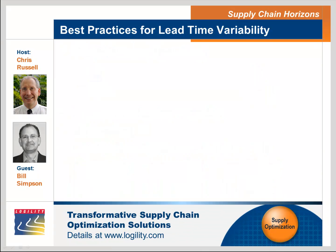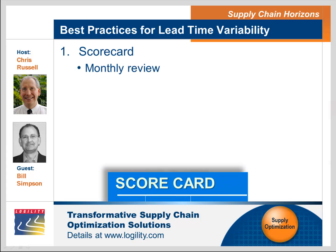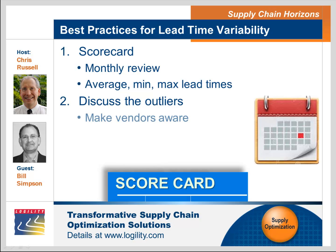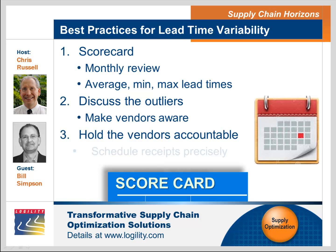What are some of the best practices or examples you have of people trying to deal with variable or unknown lead times? The first is to put it on a scorecard. On a monthly basis, talk to your vendors about lead times — the average, the mean, the min and the max — and discuss the outliers so that at least they're visible. In a lot of cases, vendors aren't aware that they're deviating from their lead times. That's the first thing: measure. Second: discuss it. Walmart is a good example — they are very good at managing lead time. They hold their vendors to account and schedule all of their receipts so that they know precisely when they're going to come in.